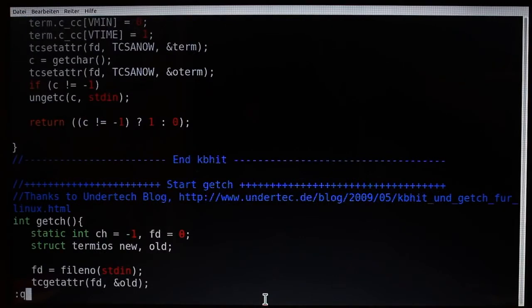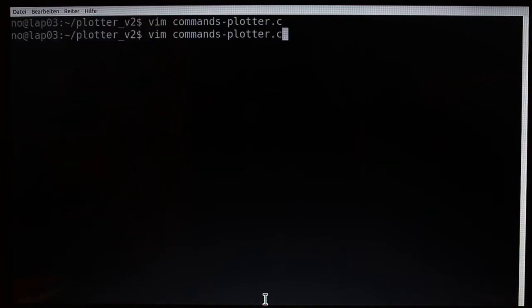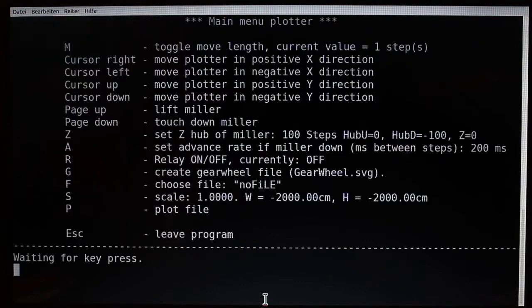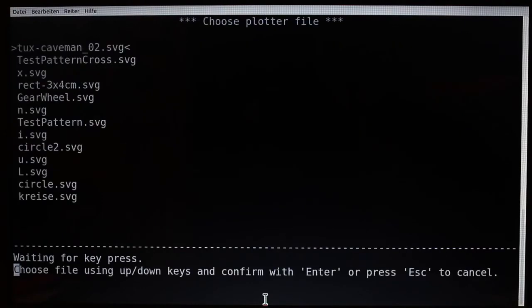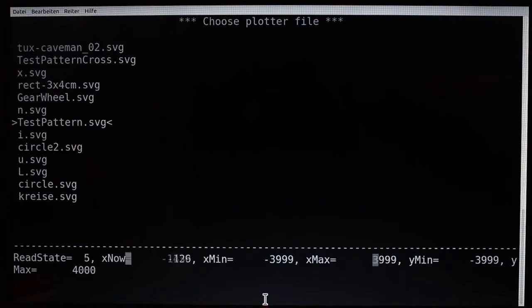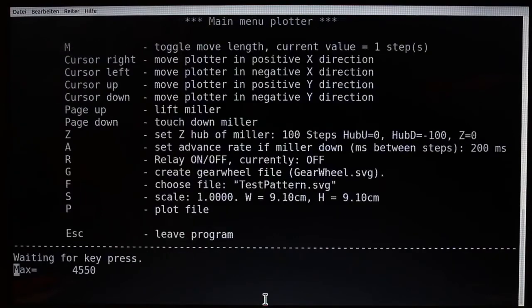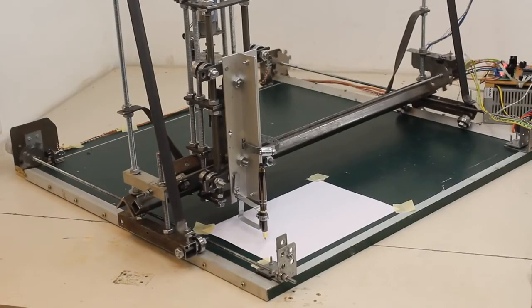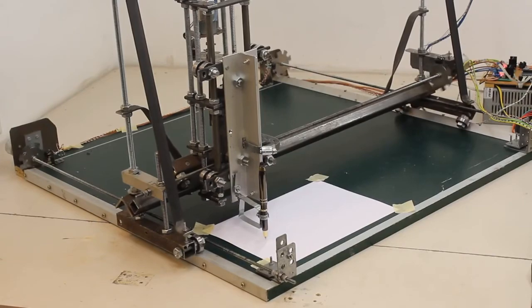The software used to control the machine is written in C and it is running from the command line. With the menu you can choose the test pattern and set some variables. With sending the start command, the machine begins to plot the file.